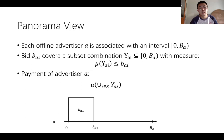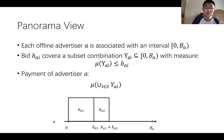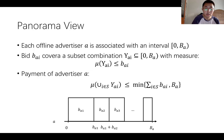We further define the payment of an advertiser to be the measure of the union of subsets for the assigned impressions. For the first impression with bid BA1, we assign it to the subset 0 to BA1, then assign the second impression to the subset BA1 to BA1 plus BA2, and so forth. This is identical to the original formulation in a deterministic algorithm, but the payment in the panorama view is actually a lower bound of the original payment.